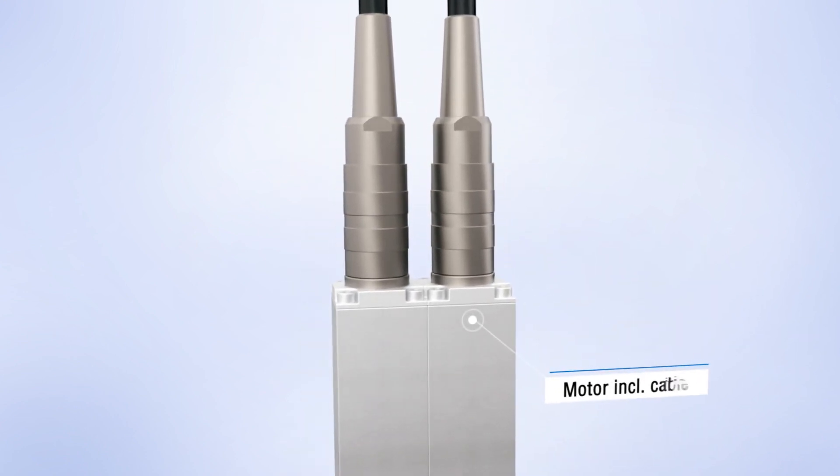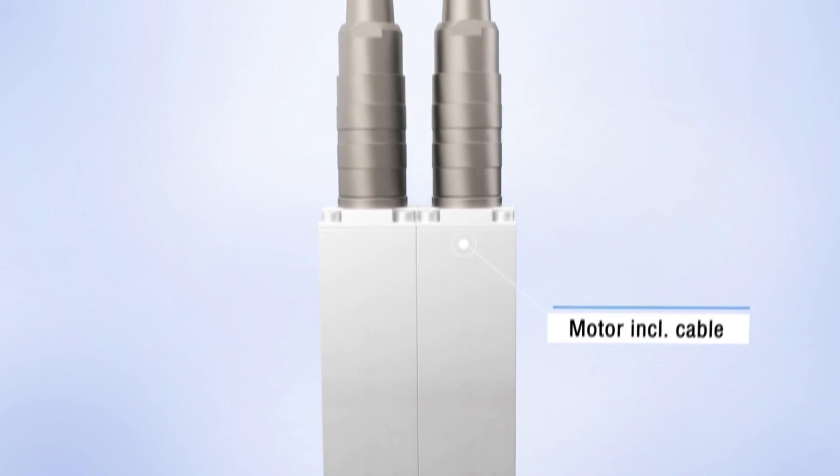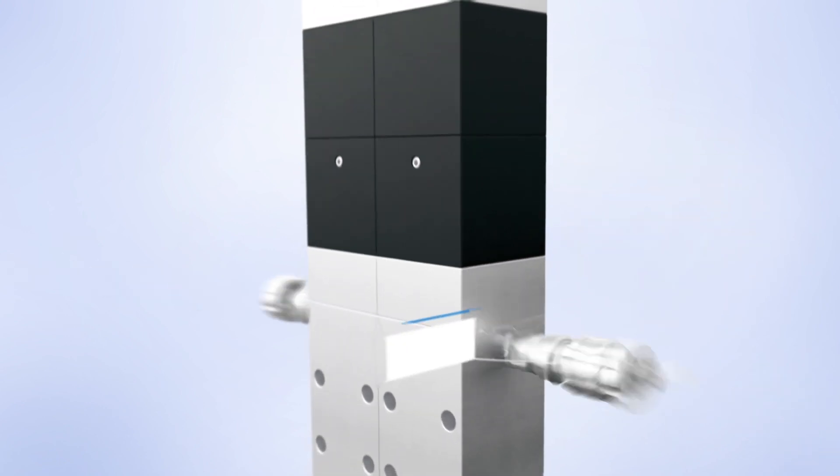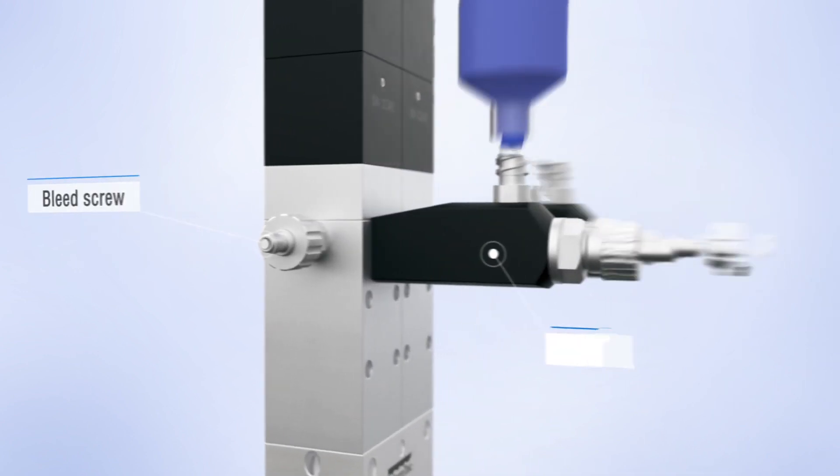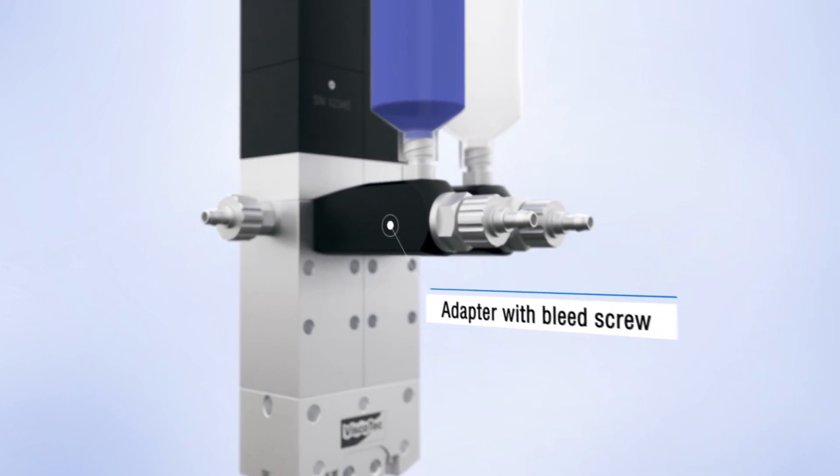The printheads are controlled by the step motor signals of the 3D printer. The bleed screw allows an uncomplicated bleed process. The adapter with bleed screw enables a fast and easy cartridge changing process.